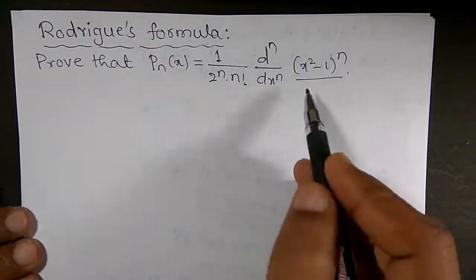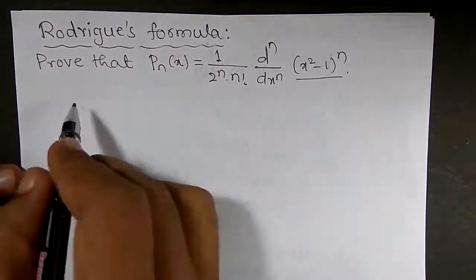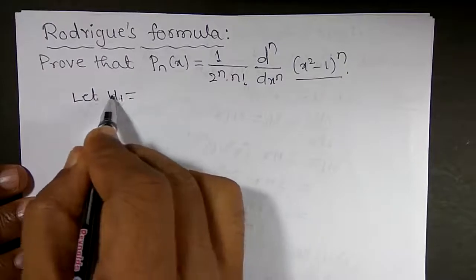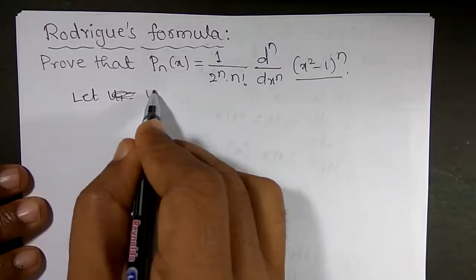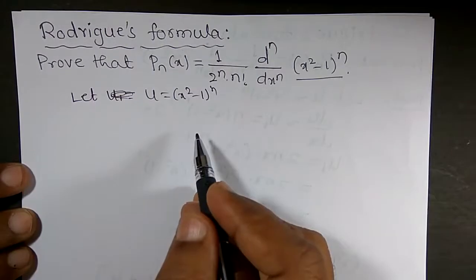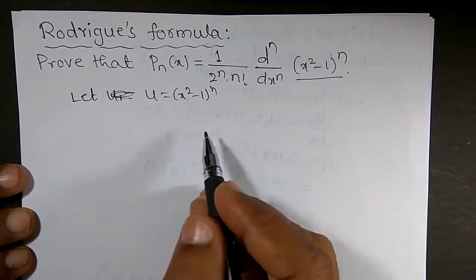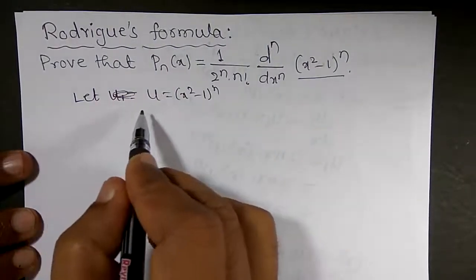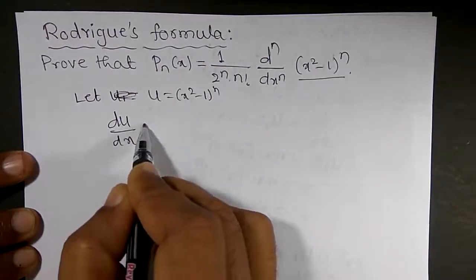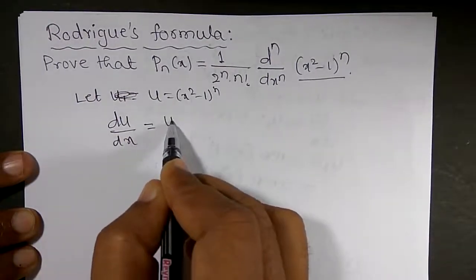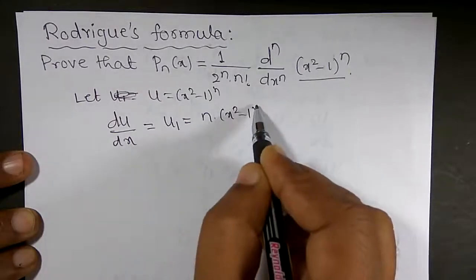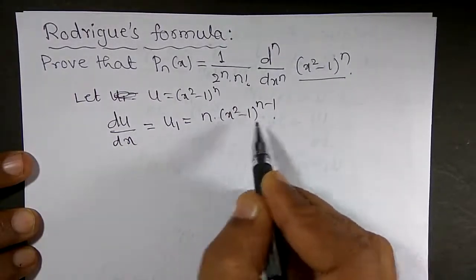First, let u equal to x squared minus 1 to the power n. I can find out the nth derivative. I will differentiate with respect to x. So du/dx, or u₁, is equal to n into x squared minus 1 to the power n minus 1.